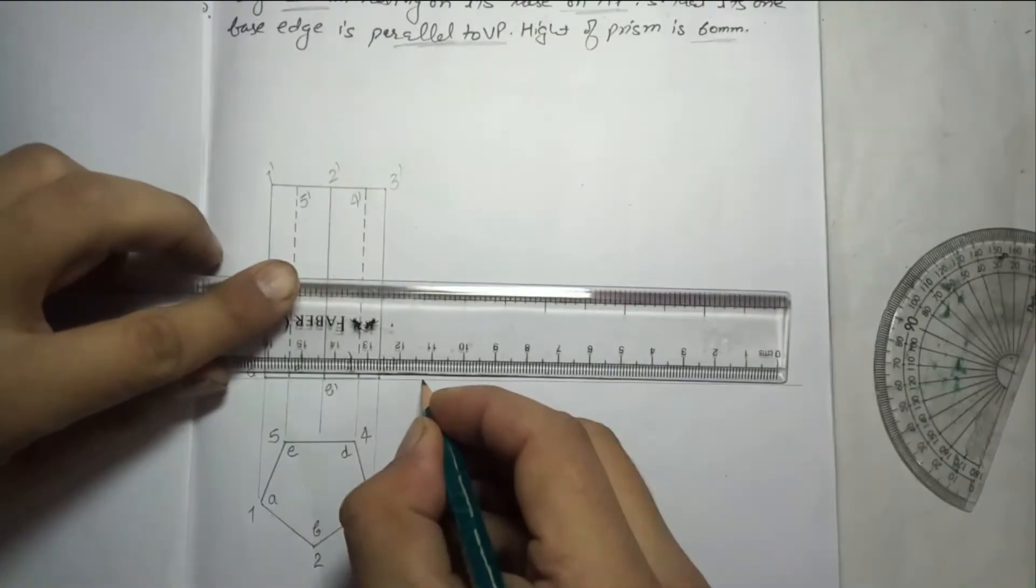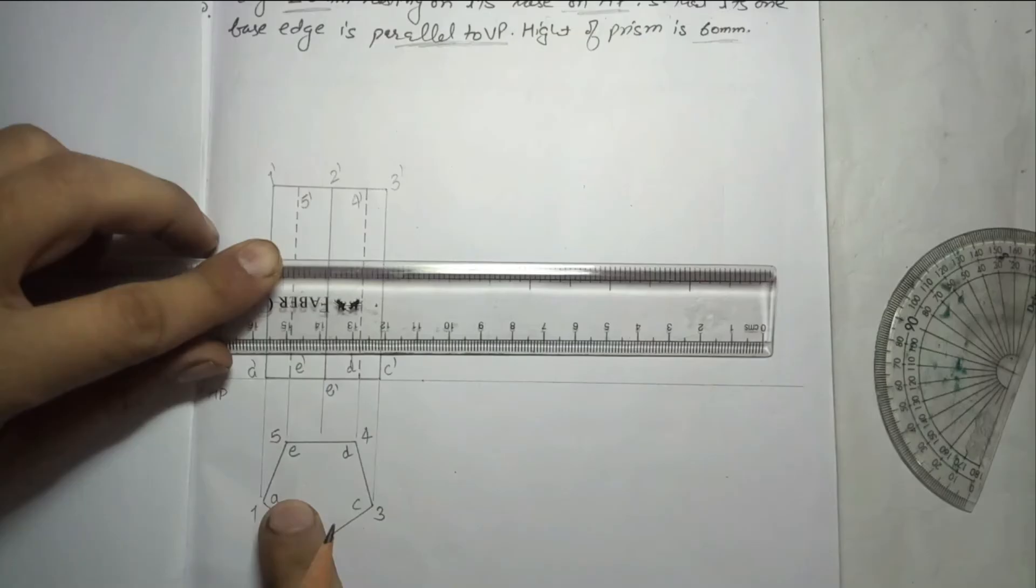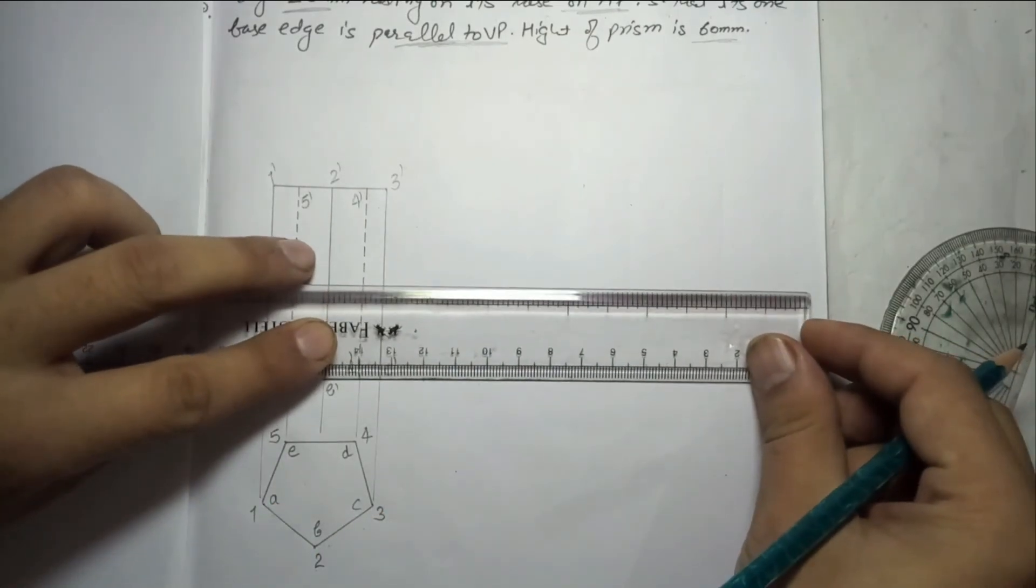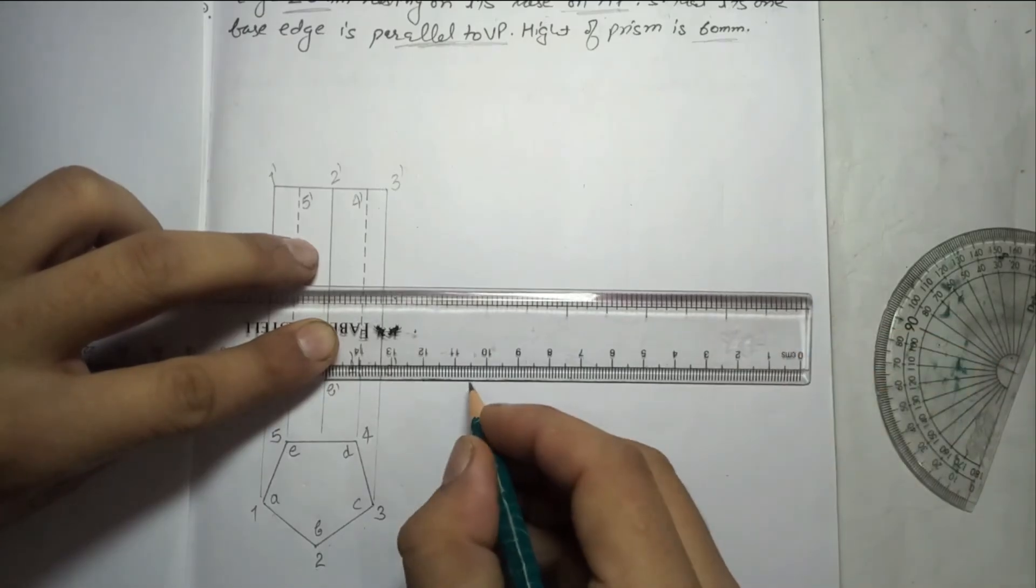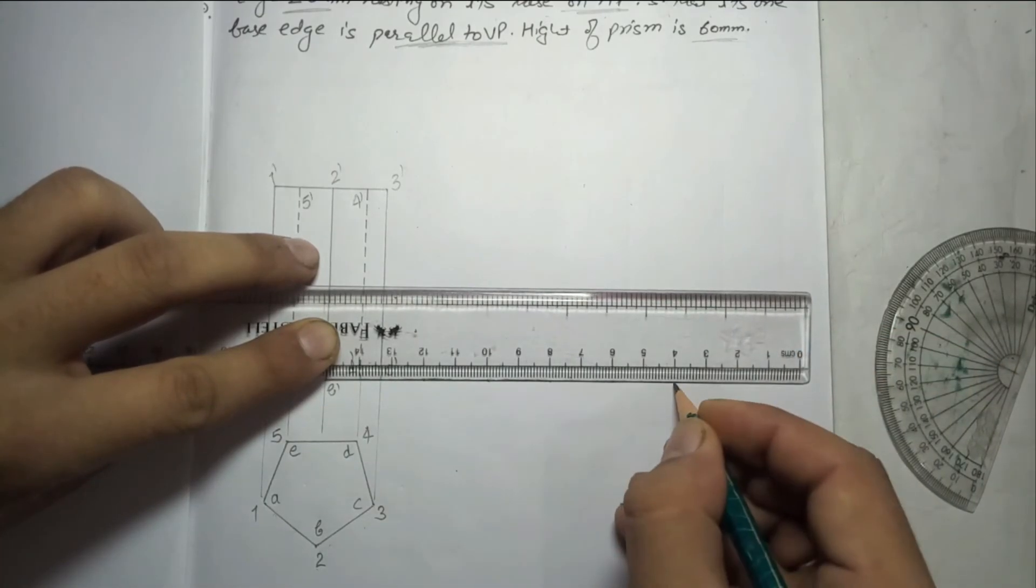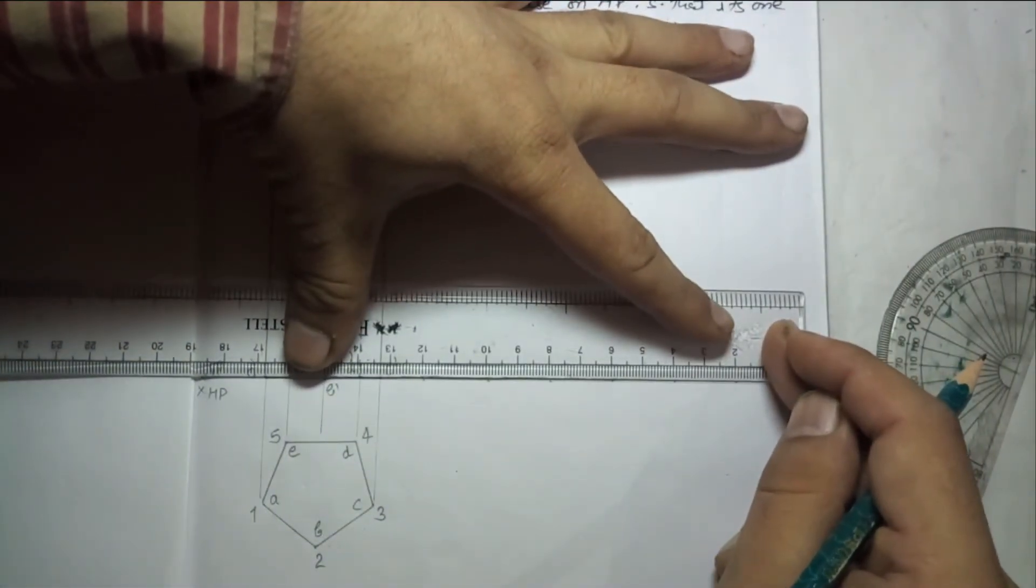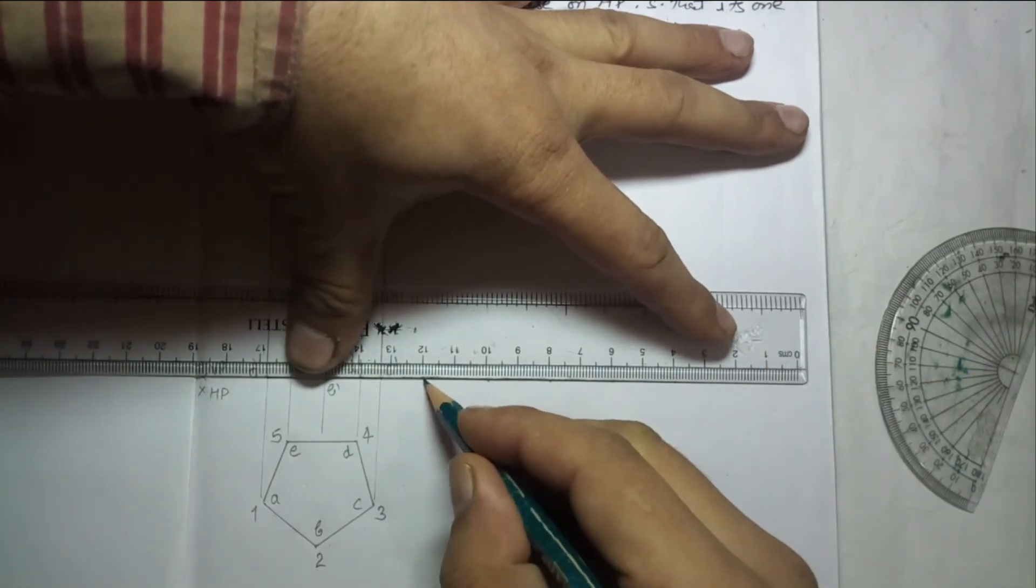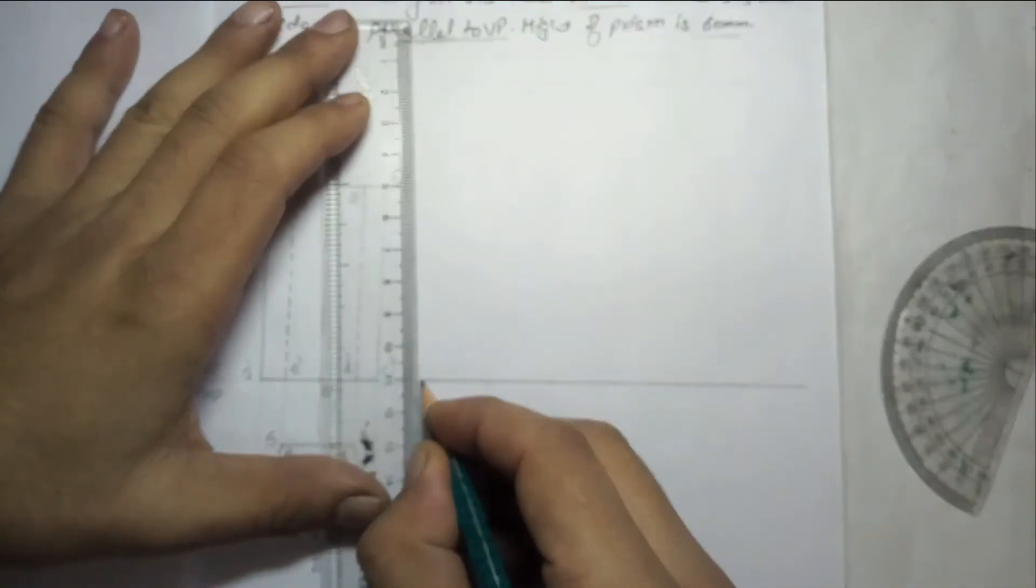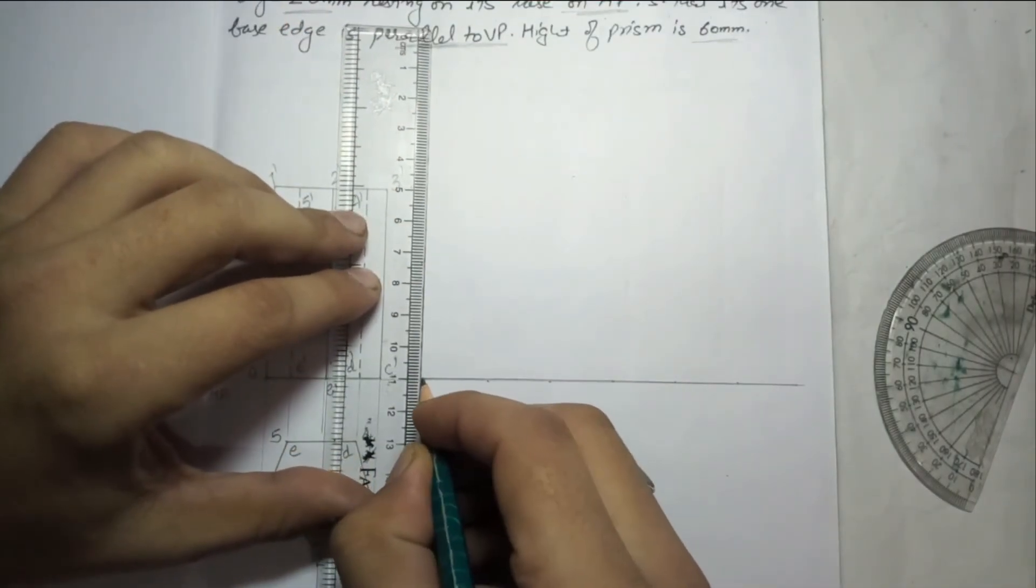Now we have to take any gap from here. It is having 20 sides, so 5 base edges are there, so 20mm five times equals 100mm. Now we have the height value, that is 60, so we will take the 60 height.